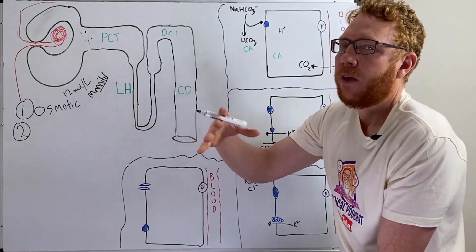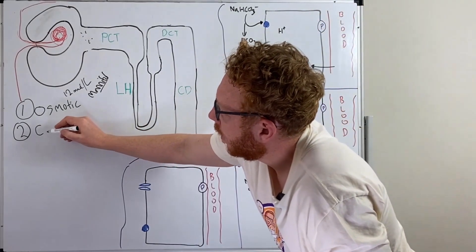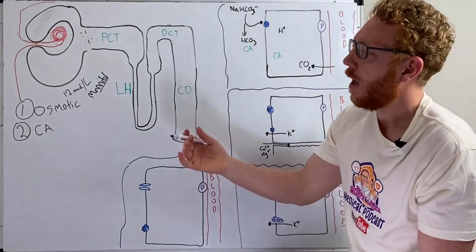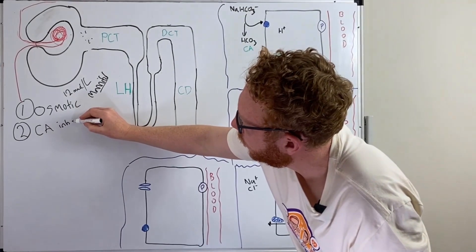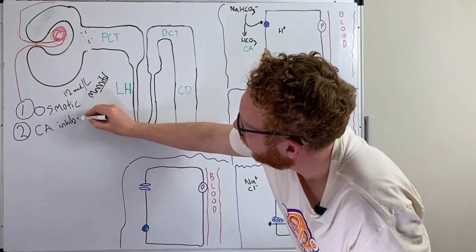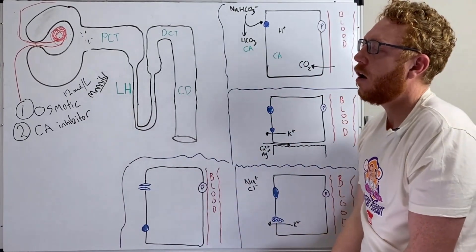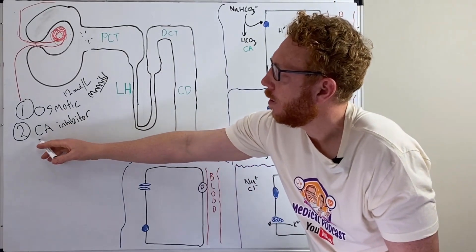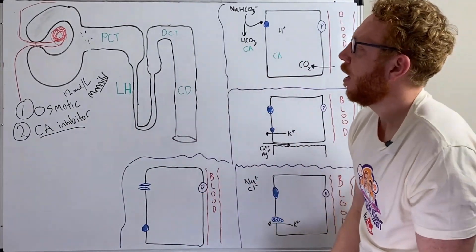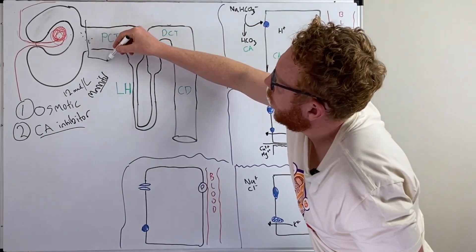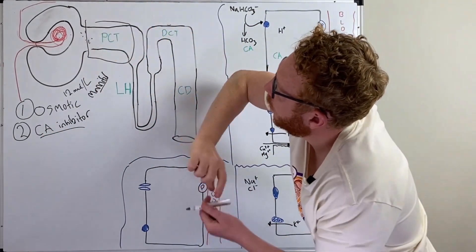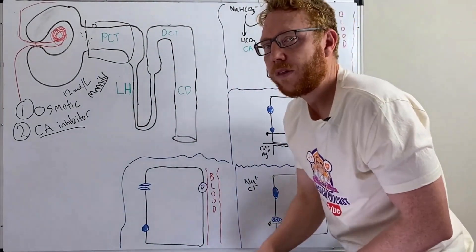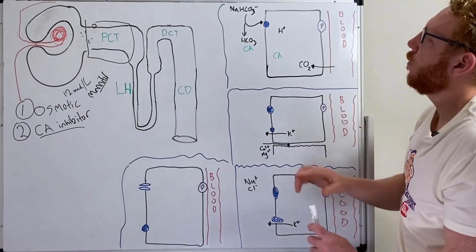Number two actually acts on an enzyme. We call this enzyme carbonic anhydrase, and this diuretic is an inhibitor — so it inhibits this enzyme. A good example of this drug is acetazolamide. Now, as mentioned, it's going to work in the PCT. If we zoom in to just one cell, the way it works in preventing sodium reabsorption is as follows.